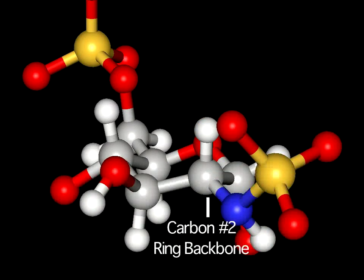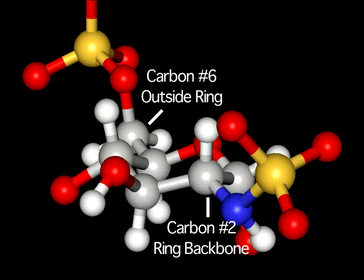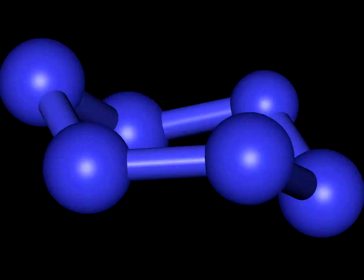Also of interest in this residue is the way in which the two sulfate groups are connected to the sugar ring, as can be seen here with the number 2 carbon is actually located in the sugar ring itself, while the number 6 carbon is tethered outside the ring, giving the sulfate group additional flexibility.